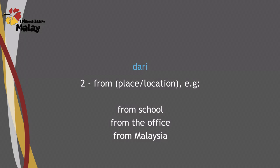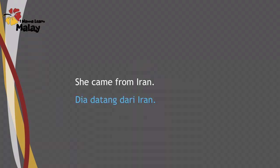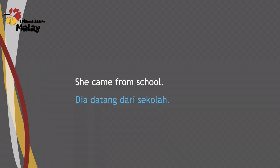Second, when 'from' is referring to a physical location or a place. For example: 'She came from Iran' — Dia datang dari Iran. Iran is a country, it is a place. Similarly, Dia datang dari sekolah — sekolah is a place or a location.